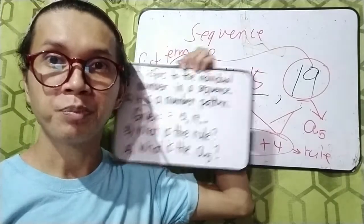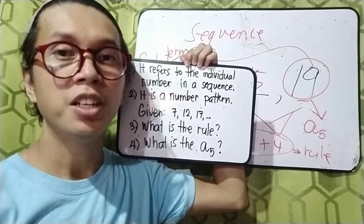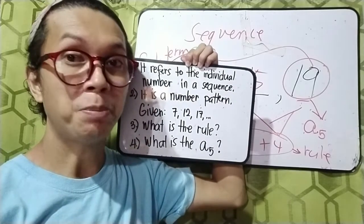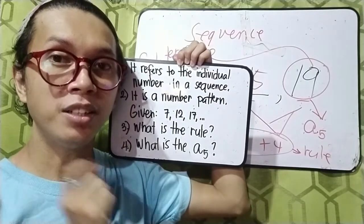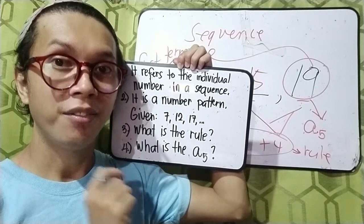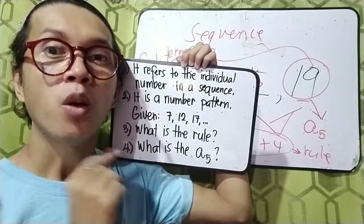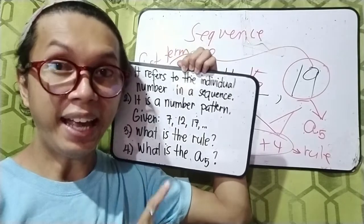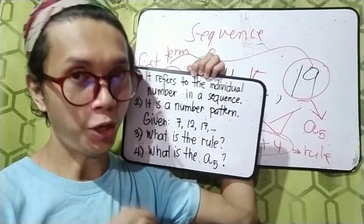Number 1, it refers to the individual number in a sequence. Number 2, it is a number pattern. Number 3 and number 4, given the sequence 7, 12, 17, what is the rule? And lastly, what is the A sub 5 or the 5th term?